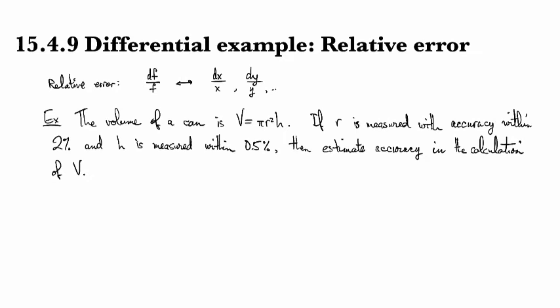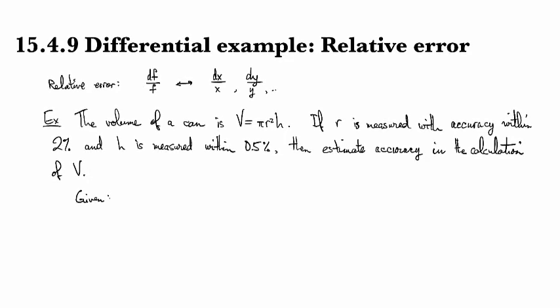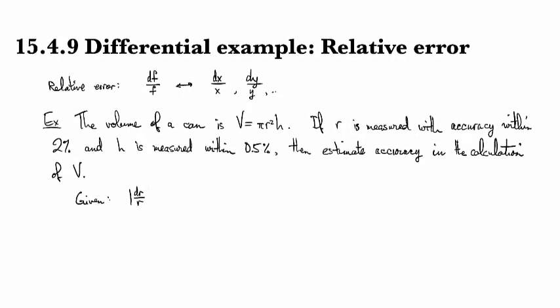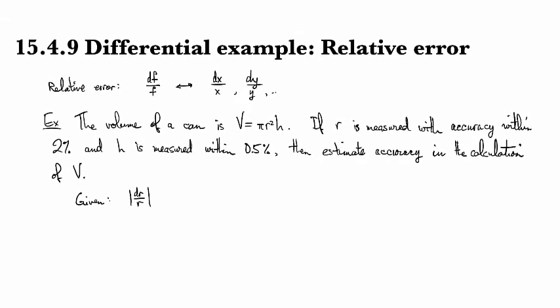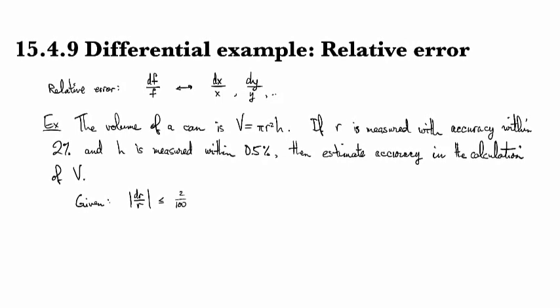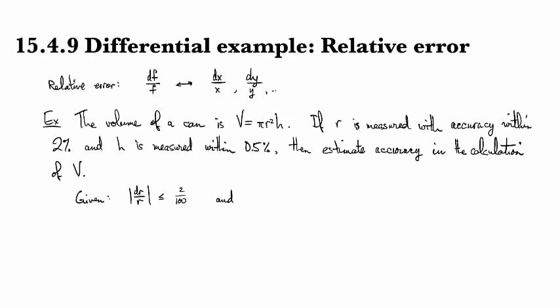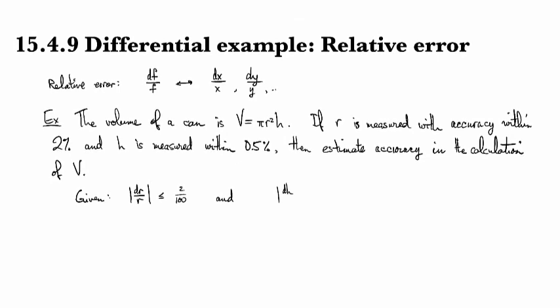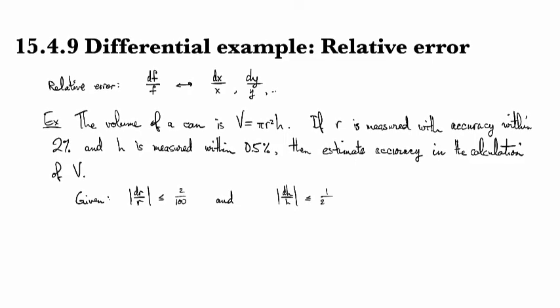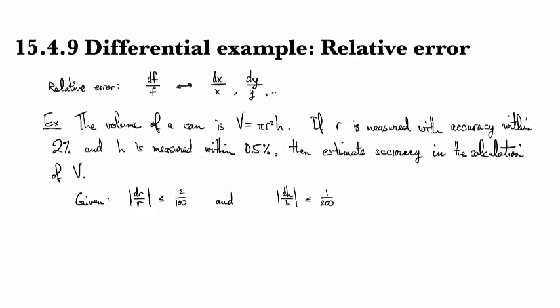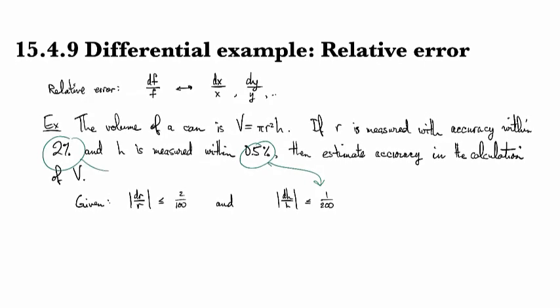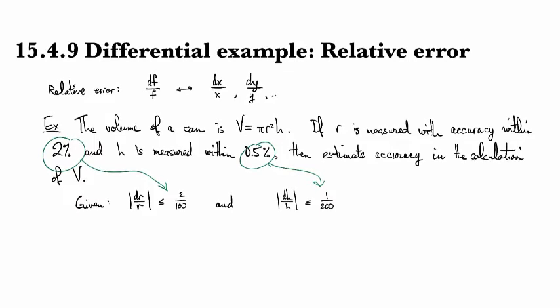We are given that the accuracy for the radius, so that's the relative value of the differential over the amount of radius, dR over R, is bounded by 2%, which is 1 over 50. And we have that the accuracy for the height, the relative accuracy dH over H, is bounded by 0.5%, which is 1 over 200.